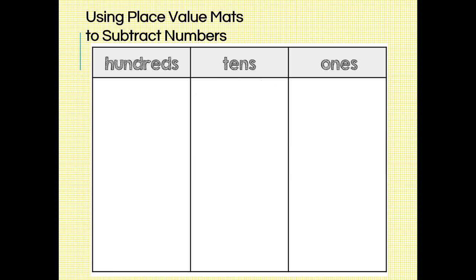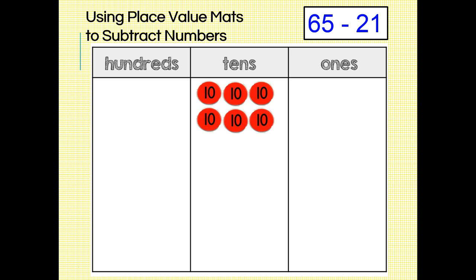This next problem is similar to the one we just did, 65 minus 21. Again, we will lay down place value disks for our minuend. For 65, we need six tens disks and five ones disks. How many tens disks and ones disks will we cross out for our subtrahend of 21?